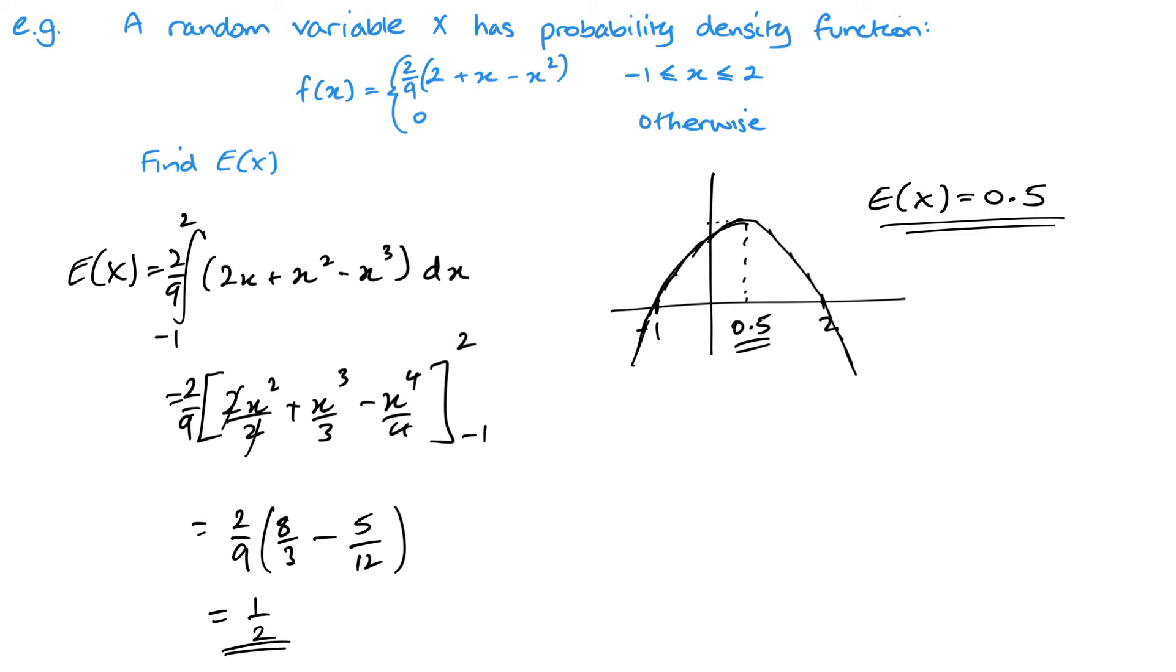We're substituting in 2 and 1, so two over nine, and then we have eight over three minus five over twelve. When I work this out, I get a half, exactly the same answer as here. You can see that sometimes you can save yourself a little bit of time. So the second was by symmetry.